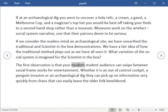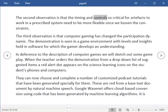The first observation is that your modern student audience can swipe between social frameworks for entertainment. The second observation is that the timing and controls so critical for artifacts to work in a prescribed system need to be more flexible once we loosen the constraints. The third observation is that computer gaming has changed the participation dynamic. The demonstration is seen in a game environment with levels and insights held in software for which the gamer develops an understanding. In deference to the description of computer games we will sketch out some gameplay.